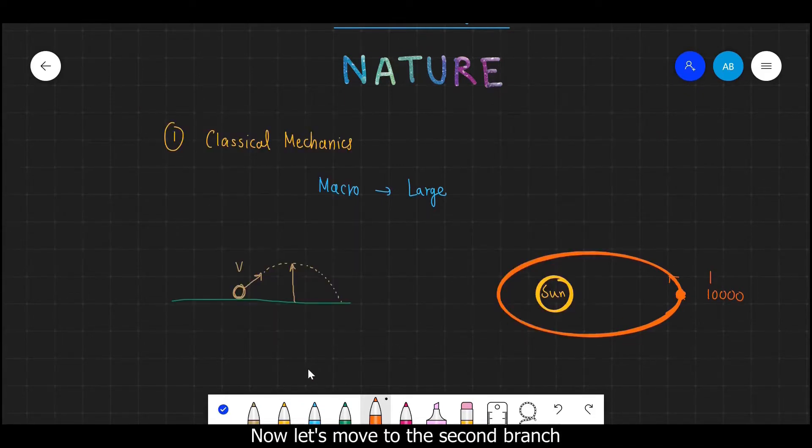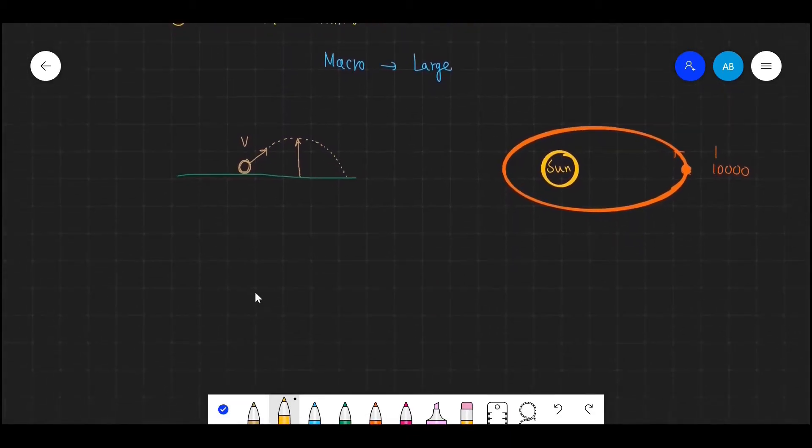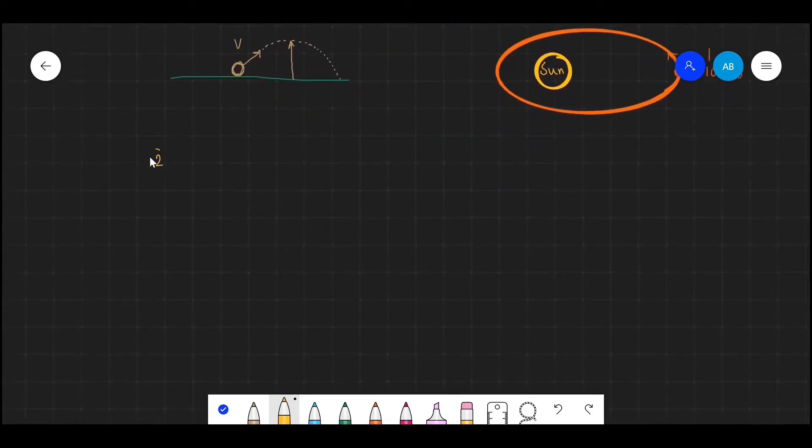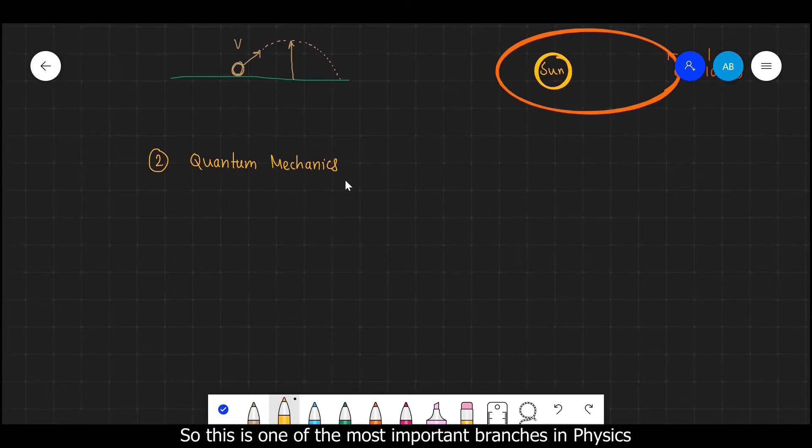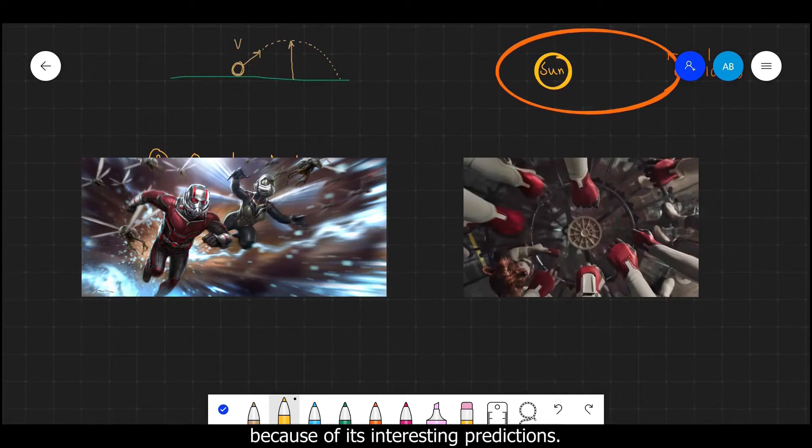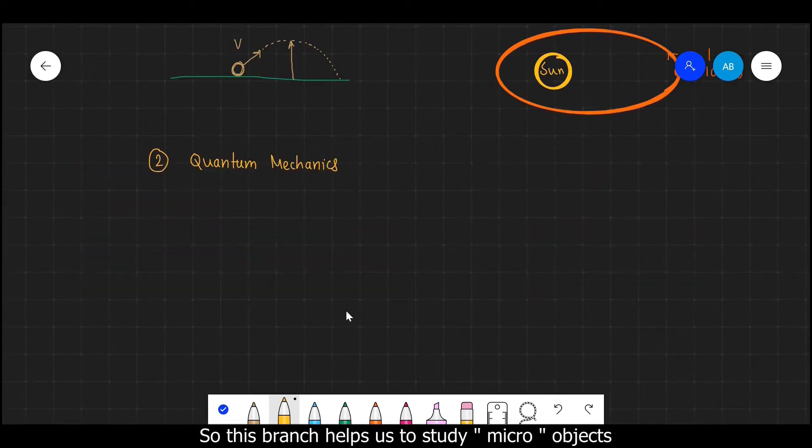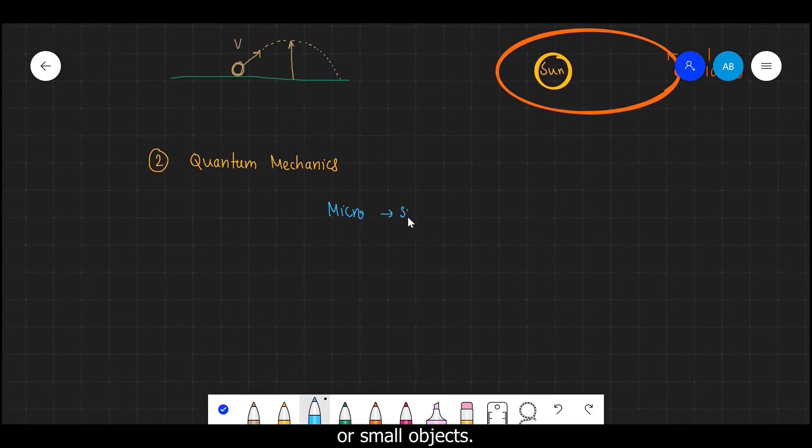Now let's move to the second branch, which is Quantum Mechanics. So this is one of the most important branches in physics and it has been used in various movies and TV series because of its interesting predictions. This branch helps us to study micro objects or small objects. We can study the atomic particles such as electrons, protons, neutrons, as well as subatomic particles such as quarks.